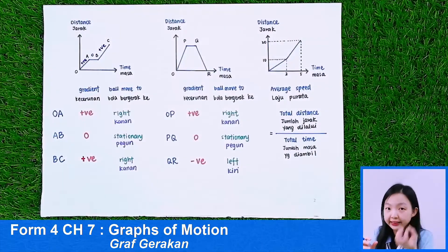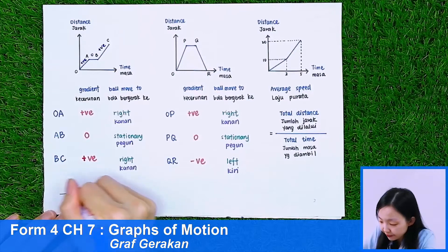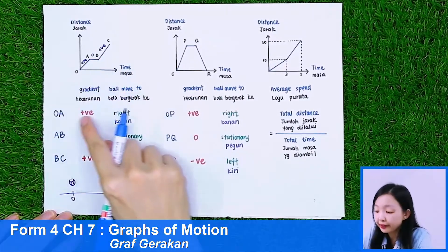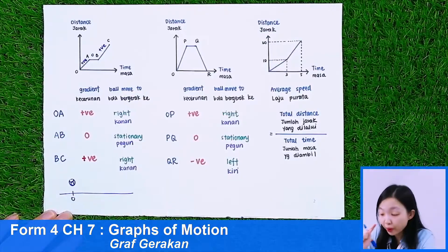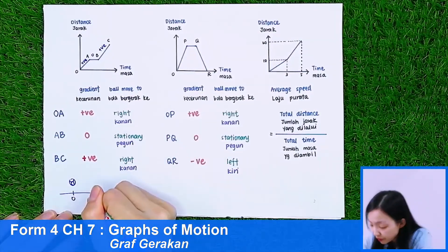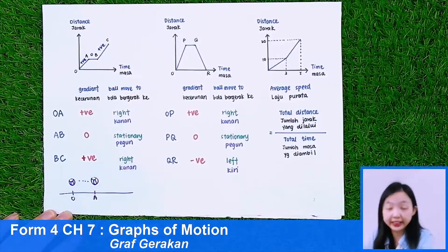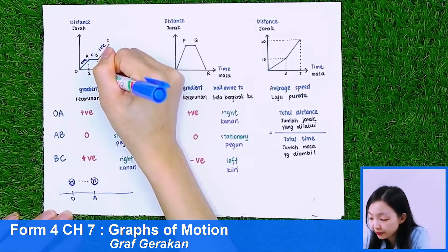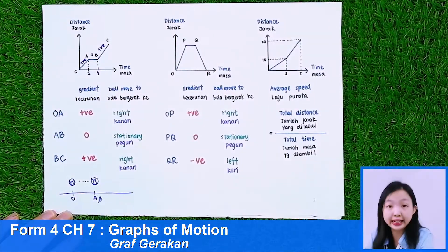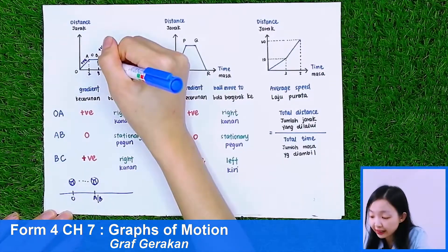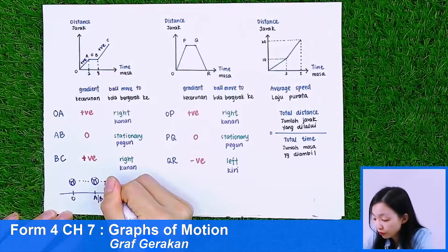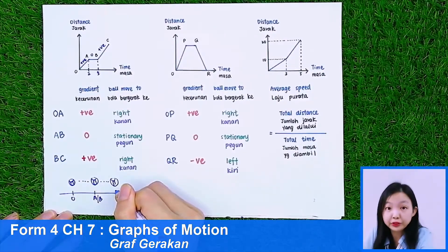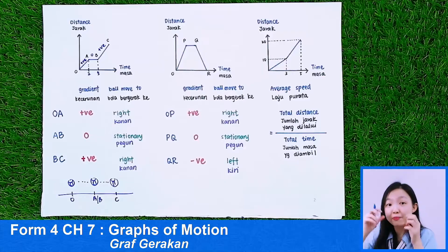What do you think you will see if this is represented by a ball? When the gradient is positive, the ball is moving to the right. It starts from O, moves until a certain point, stops from the 2nd second until the 5th second — that section is stationary. After the 5th second, since the gradient is positive, it continues to move to the right until C.